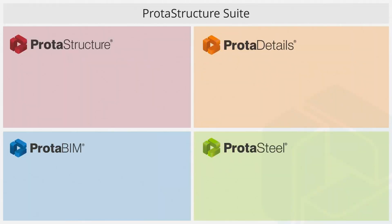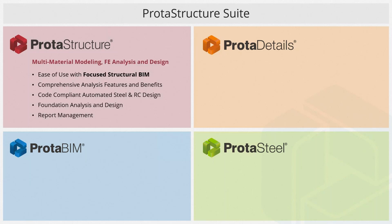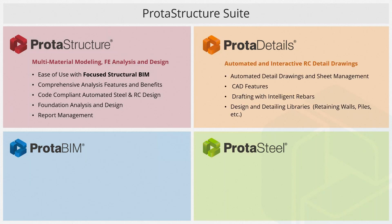Prota Structure Suite is broken into four different modules. The first one is Prota Structure, which is our core module. In here you can analyze and design members regarding the selected code, create your reports. It's flexible software that can connect to Prota Detail, Prota Steel, and Prota BIM. You can push your model to Prota Details and with a single click produce all your detailed drawings. If you don't have CAD software, you can use our CAD features.